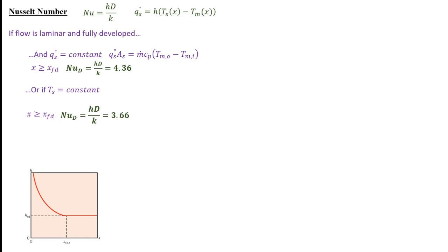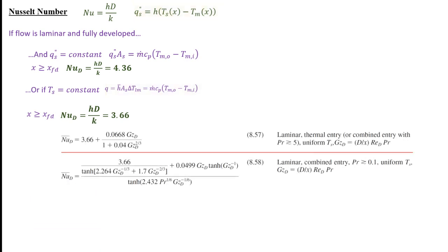Because we have an equation for Q as a function of the average heat transfer coefficient for a constant surface condition, it's useful to have an equation for that average h, which takes into consideration the entrance region where the local h value is decreasing. Several equations are given for the average heat transfer coefficient in the entrance region. The first incorporates the Graetz number — the average Nusselt number is much greater at the entrance region as expected, but decreases to the fully developed value of 3.66. This equation is valid for fluids with very high Prandtl numbers. A second equation, which is less simple, can be used for lower Prandtl numbers.